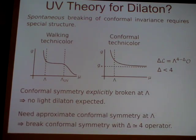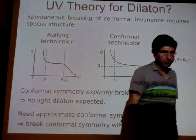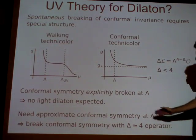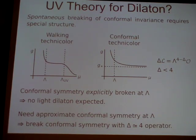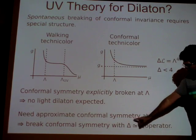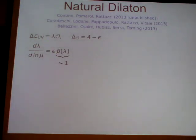This picture suggests how we can get a dilaton: we need approximate conformal symmetry at the scale λ. Even though the coupling is getting strong there, we need to have approximate conformal symmetry, and the way to do that is to break the conformal symmetry with an operator that has dimension nearly 4. Such an operator does not break conformal invariance except for a little tiny bit. This is something that has been discussed by a number of authors, one of whom is here in the room.